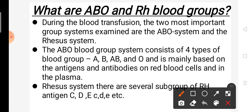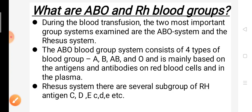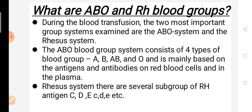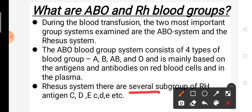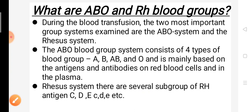Now let's look at the Rhesus system. There are several subgroups of Rh antigens — C, D, E and others. In the ABO system there are only four types: A, B, AB, and O. But in the Rhesus system there are several subgroups.